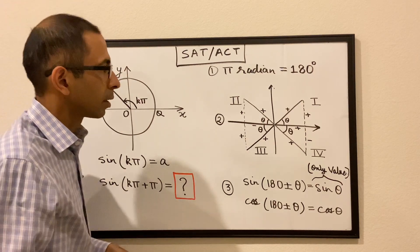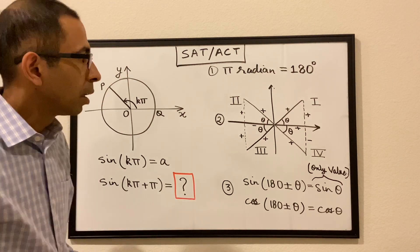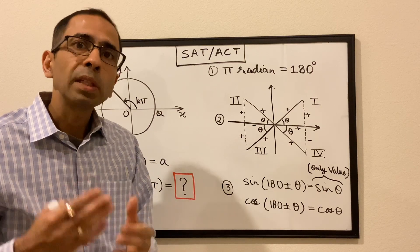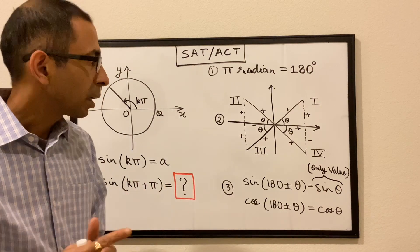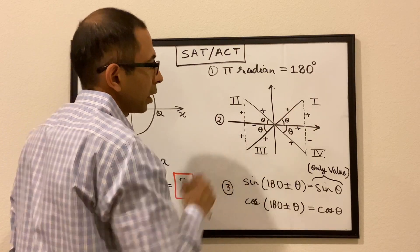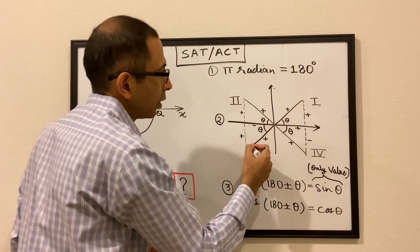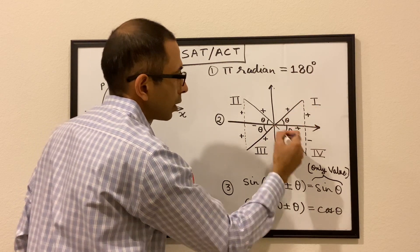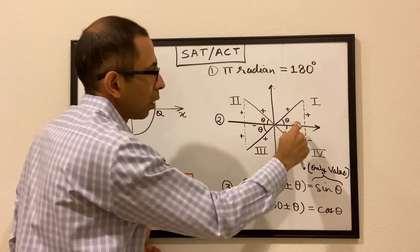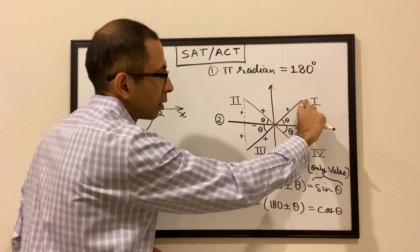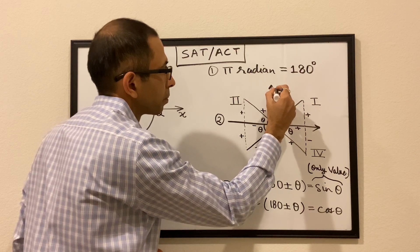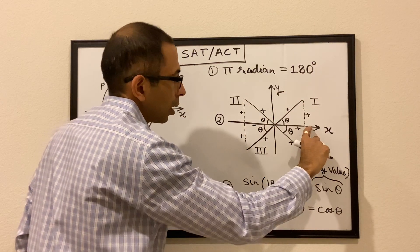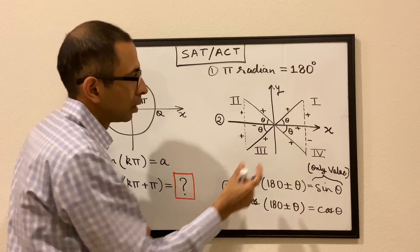The second thing is that, as we all know, there are four quadrants. We need to understand whether sine, cosine, tangent — all these trig functions — will be positive or negative in which quadrant. To understand that, we look at this diagram. We have a cross and right angle triangles in each of the quadrants. The y-axis positive side and negative portions are marked, and similarly on the x-axis this side is positive, this side is negative.